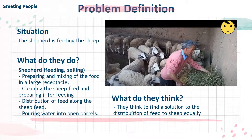The first one is problem definition. The given situation was the overall process of the shepherd managing the sheep's barn. We could see what shepherds do when they prepare food for sheep, distribute it to sheep, and clean the sheep's barn, and the shepherds are looking for a solution to the uniform distribution of food to sheep.